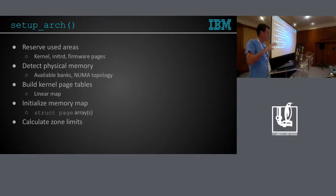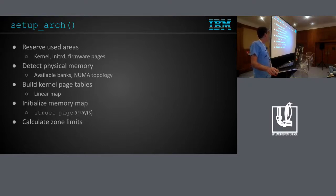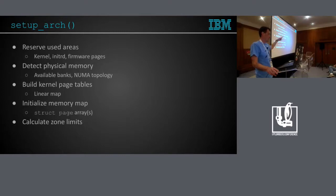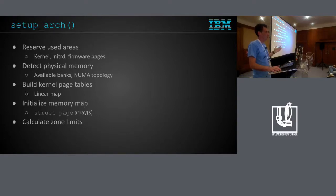setup_arch does most of the heavy lifting. First it reserves areas used by the kernel, initrd, firmware, and physical regions known not to be usable as normal system RAM. Then it reserves the text — depending on the architecture it could be a really weird sequence of reserve, detect, unreserve, and figuring out we have a bit more memory. In the end of detection and reservation, we get a NUMA topology and memblock memory filled with memory banks, plus memblock reserved for areas that should not be touched by the kernel.